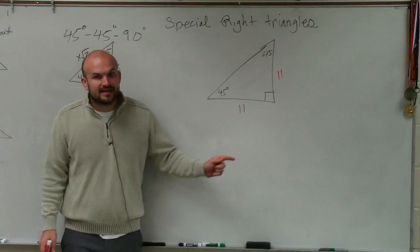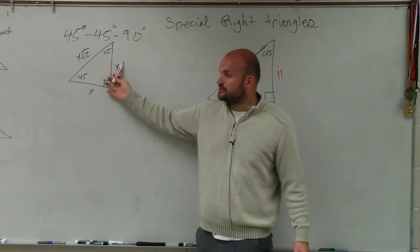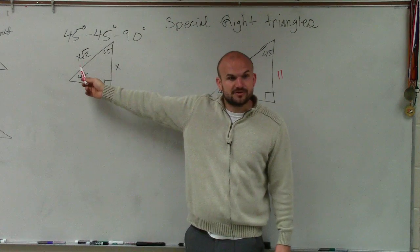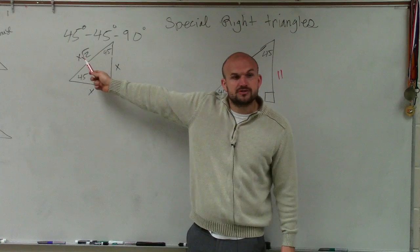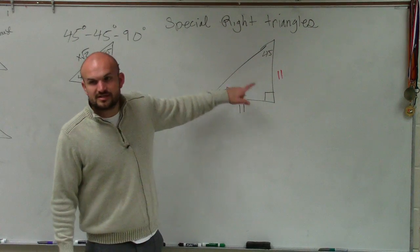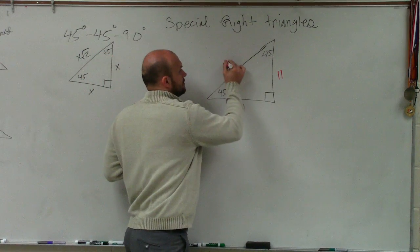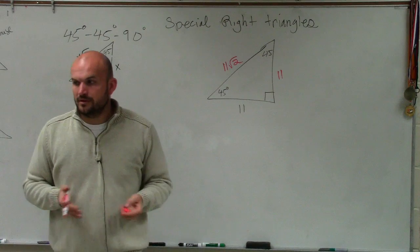Now, the last thing is, if we look at our relationship, what we found out is that the relationship between the legs and the hypotenuse was you just take your leg and multiply it by the square root of 2. So all I need to do, Caleb, is just take my leg and multiply it by the square root of 2.